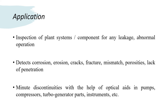Now let's discuss the applications of visual inspection for plant system components. Visual inspection helps detect leakage, abnormal operation, corrosion, erosion, cracks, fracture, mismatch, porosity, lack of penetration, and minor discontinuities with the help of optical aids, including compressor and turbo-generator parts.